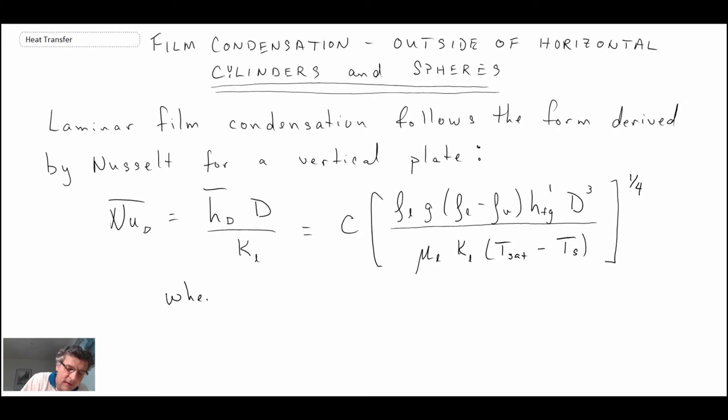With this, C is going to depend upon whether we're dealing with a sphere or a horizontal cylinder. If we're dealing with a sphere, then C is 0.826. And if our problem is dealing with a horizontal cylinder, then it would be 0.729.